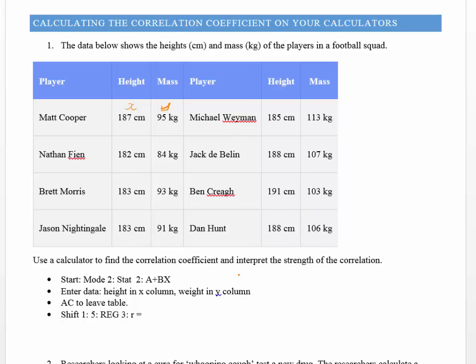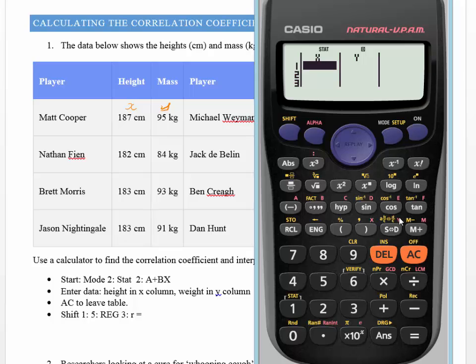So if I get my calculator back up again, what I can do then is I can start putting those numbers in. So the first number for my x column is 187, press equals, and then I've got 182 and 183 and another 183 and so on and so on.